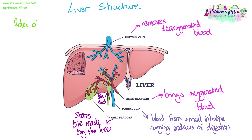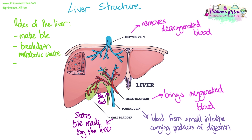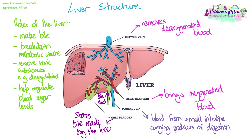We need to know the varied roles of the liver. It makes bile, which is useful in digestion. It helps to break down metabolic waste products and to remove toxic substances from the body, such as drugs or alcohol. It helps to regulate blood sugar levels — it can store glucose as glycogen, break that glycogen down again to produce glucose, produce glucose from other molecules, and it can break down insulin.